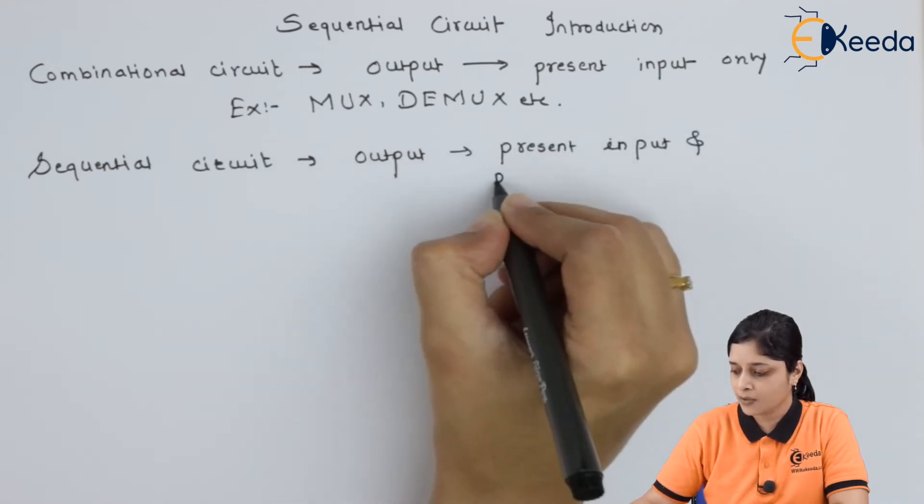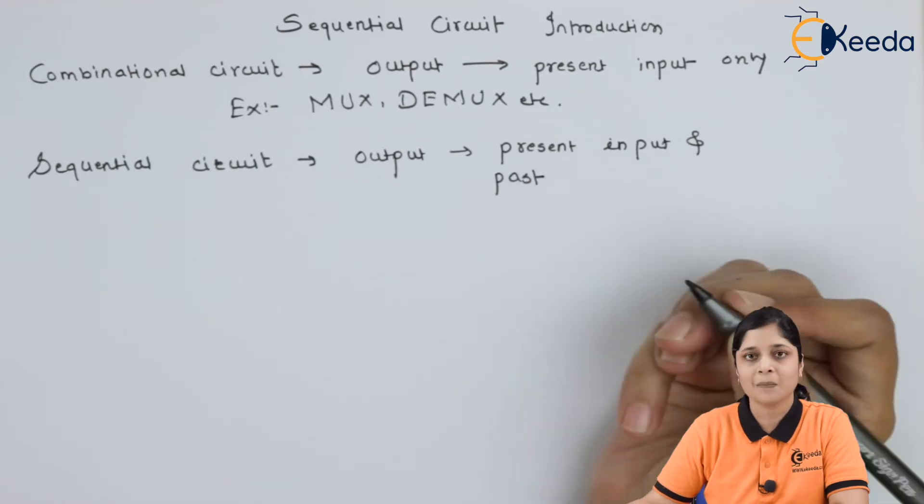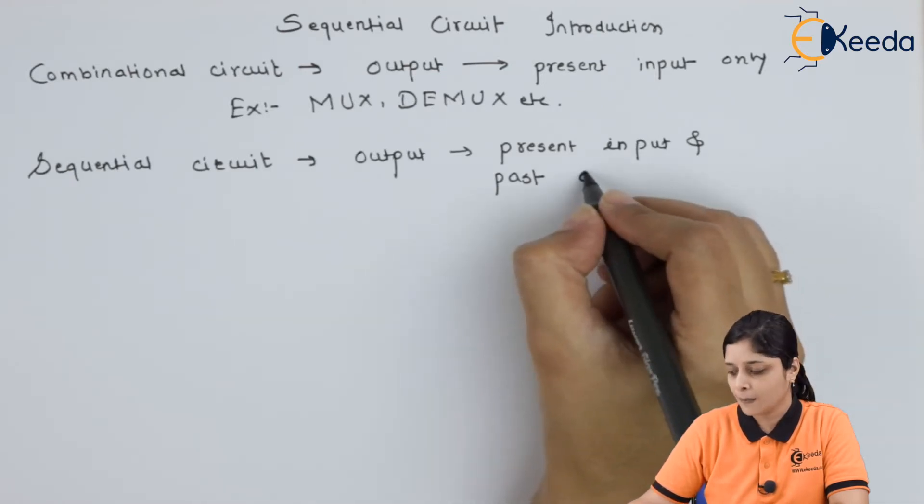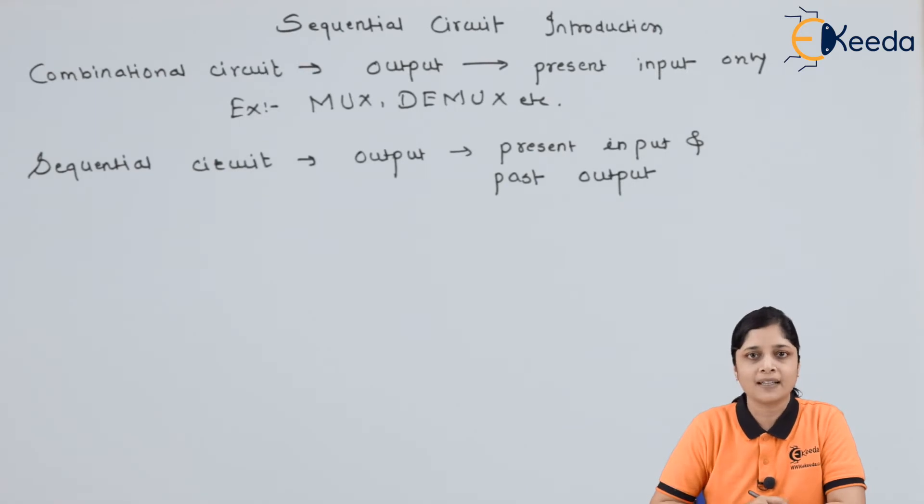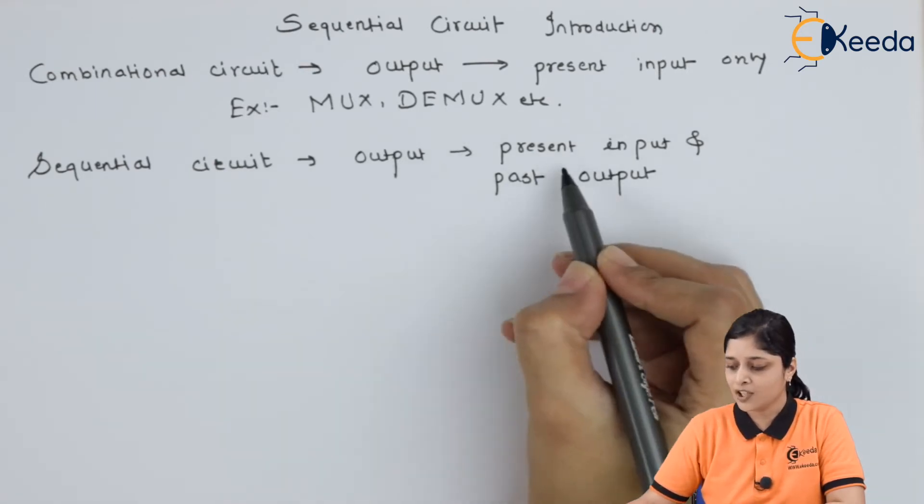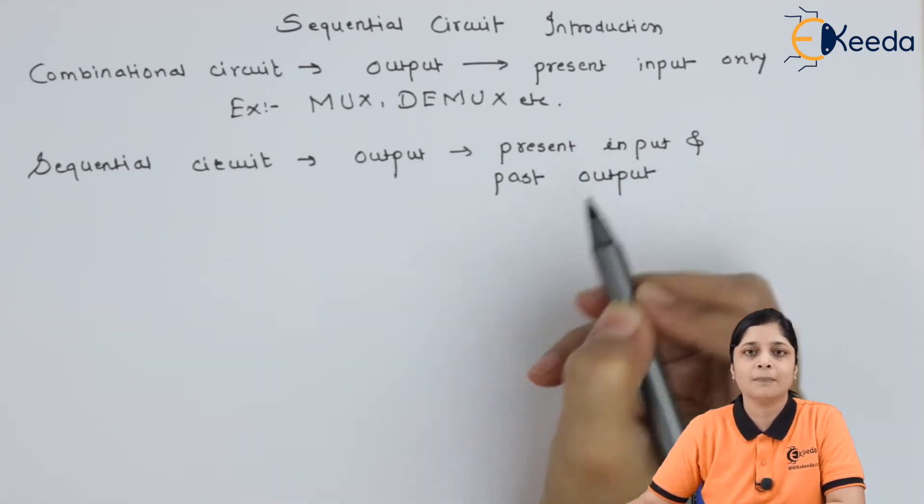And here, one more thing is added, that is past output. So, output depends on present input and past output.